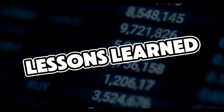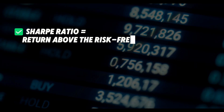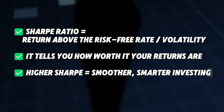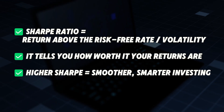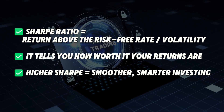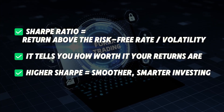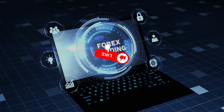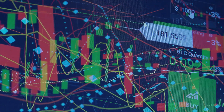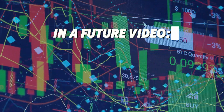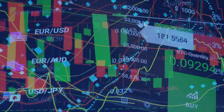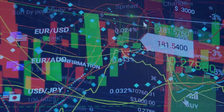Let's wrap this video up. The Sharpe Ratio is where you divide the return above the risk-free rate by your volatility. It tells you how much your returns are actually worth, and a higher Sharpe Ratio means smoother, smarter investing. If this short video helped you out by making sense of the Sharpe Ratio, click the like button and subscribe. In further videos I will talk more about performance ratios, for example the Sortino Ratio — a Sharpe upgrade that only penalizes downside risk. See you in the next video. Goodbye!